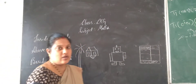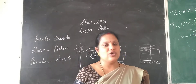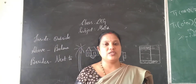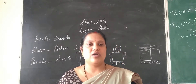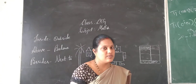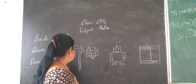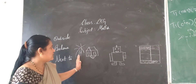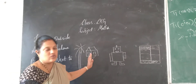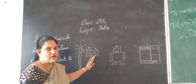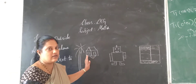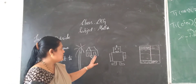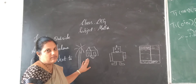Now the next concept: besides and next to. These two words give the same meaning. Based on the position of certain things or articles, these concepts are used. I have drawn two pictures here — this coconut tree is besides the house, which means it is very near. You can also say the house is next to the coconut tree.